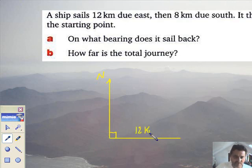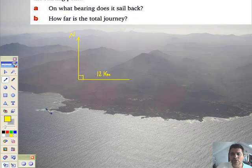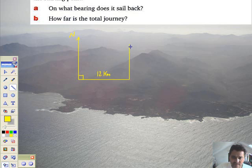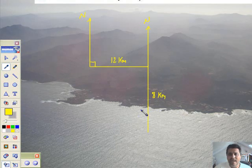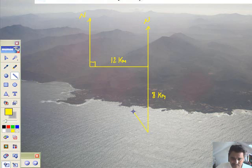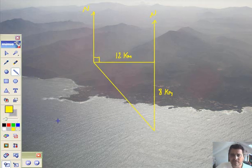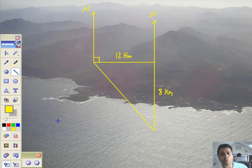And then it goes 8 kilometers due south. Well if we're talking about bearings now, let's just put another north line in for completeness. And now I'm going due south, that means straight down. So here I go. So that's a north line, and 8 kilometers. I know it doesn't look like, I know it looks longer than the 12, it doesn't matter. It's 8 kilometers due south. And it then sails straight back to the starting point. In other words I'm here, and I want to go over there now from my picture. On what bearing does it sail back?